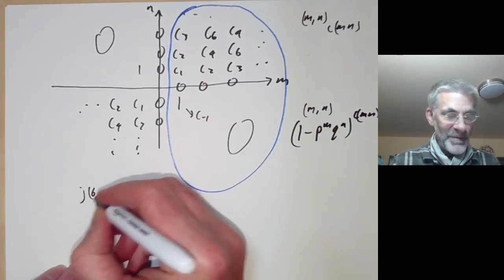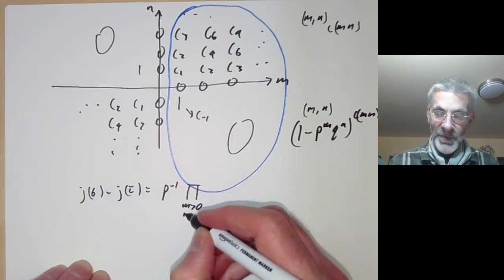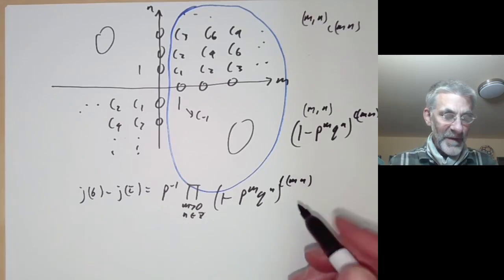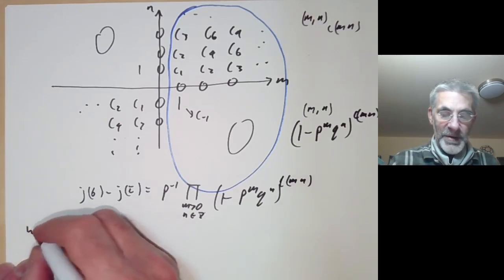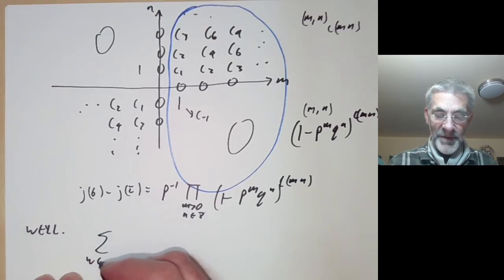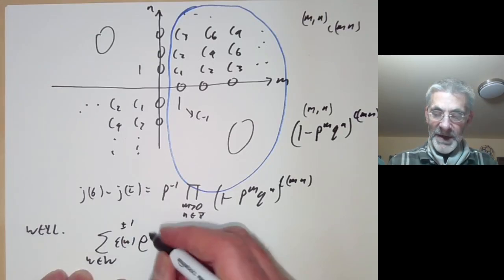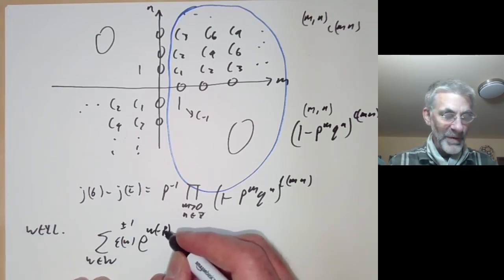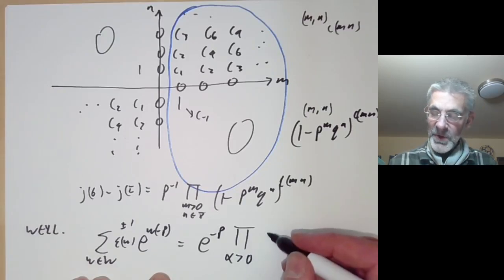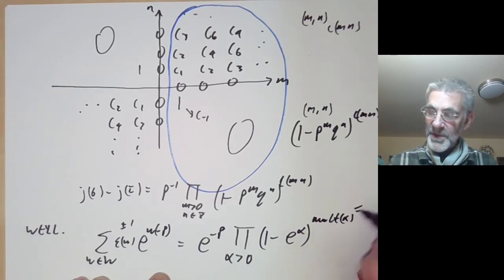The formula j(σ) - j(τ) = p^{-1} × ∏_{m>0, n} (1 - p^m q^n)^{c(mn)} is actually very similar to the Weyl denominator formula for a finite-dimensional Lie algebra. The Weyl denominator formula says: the sum over the Weyl group W of sgn(w) · e^{w(−ρ)} equals e^{−ρ} times the product over all positive roots α of (1 - e^α)^{mult(α)}, where the multiplicity is always one in the classical case.